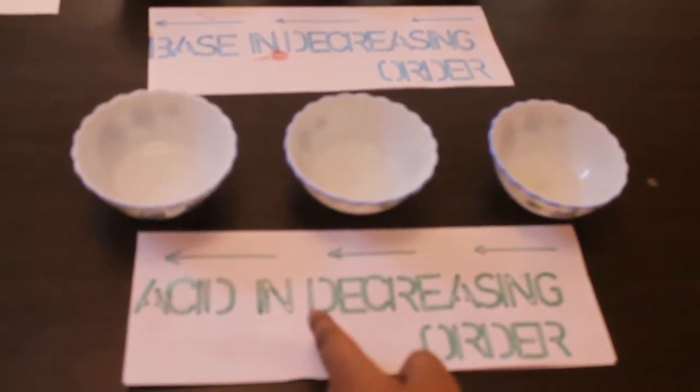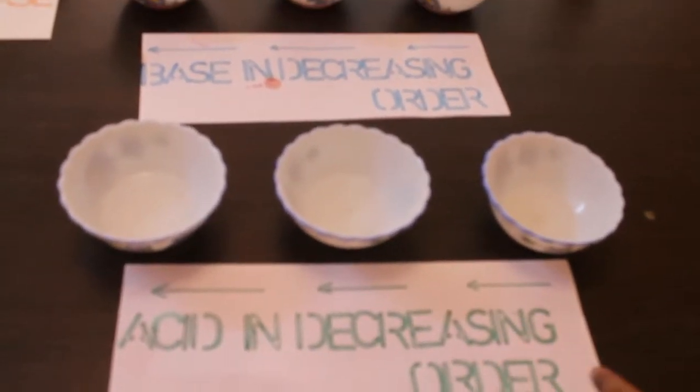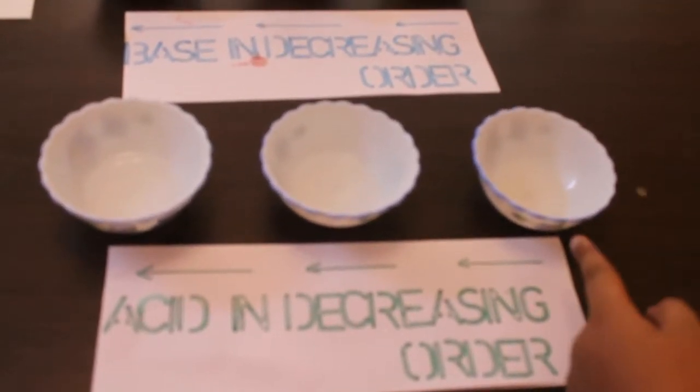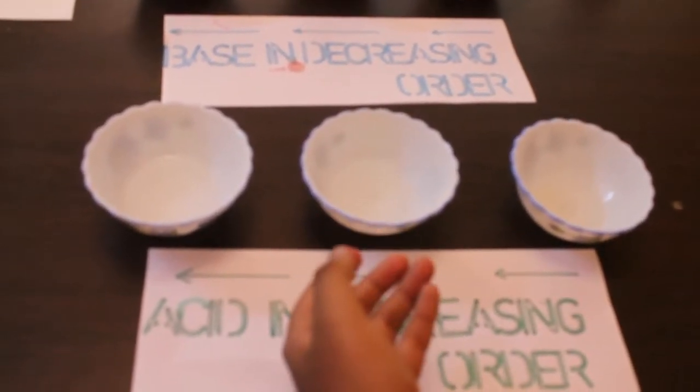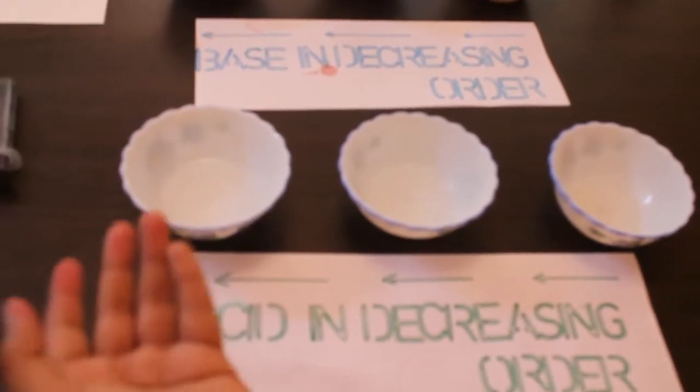Now we have acid in decreasing order of dilution. Here we have the strongest. Here we have a little bit weaker and here we have the weakest. So now we shall see the color change.